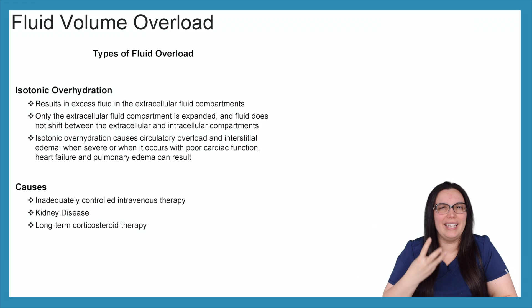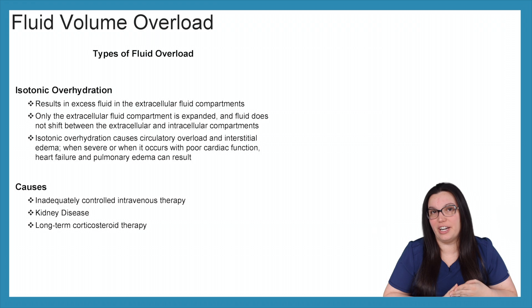So there's three key types of fluid overload. The first being isotonic overhydration. We also have hypertonic overhydration and hypotonic overhydration. So we're going to begin by looking at isotonic overhydration. It results in an excess fluid in the extracellular fluid compartments. Only the extracellular fluid compartment is expanded and fluid does not shift between the extracellular and intracellular compartments. Isotonic overhydration causes circulatory overload and interstitial edema.